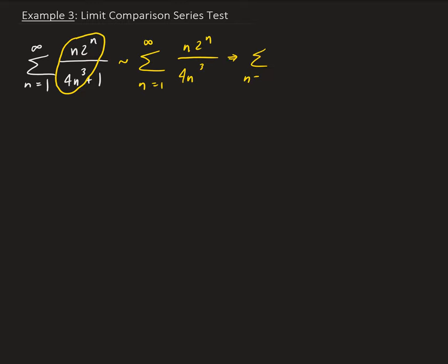This is algebraically equivalent to the series of 2 to the n over 4n squared, because we can cancel out an n there.